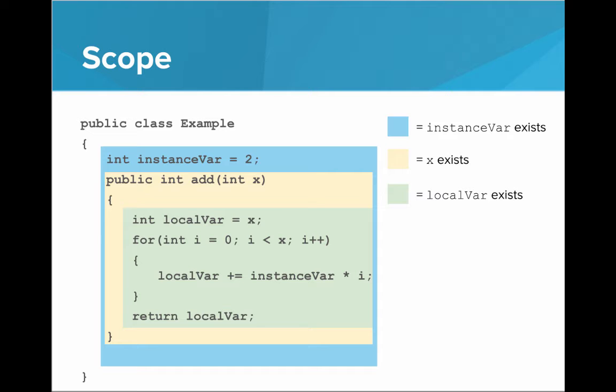Now what about the for loop? We see that int i is defined inside the for loop statement. It turns out variables defined in a for loop only exist inside that for loop, so i only exists inside that for loop. These colors represent the scope of each of these variables.